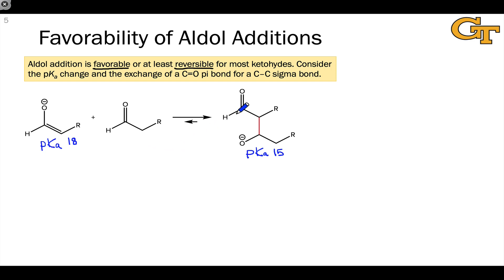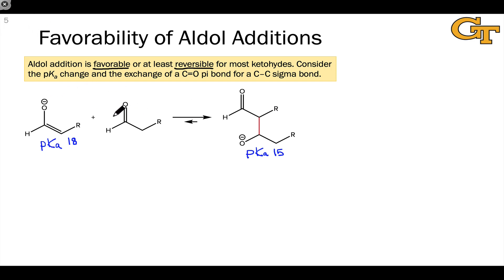We do have a reorganization of bonds: a carbon-oxygen pi bond is cleaved in the electrophilic starting material and a carbon-carbon sigma bond is formed. That can be a thermoneutral or even a slightly disfavored process. However, on the whole, these additions can usually be either rendered reversible or made favorable.